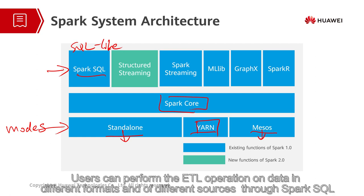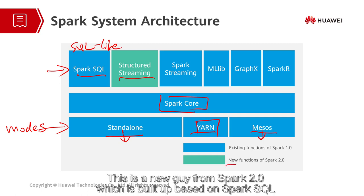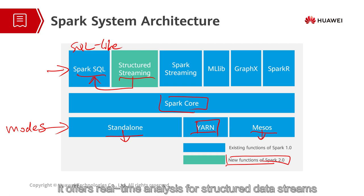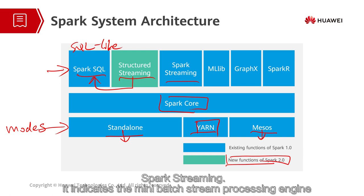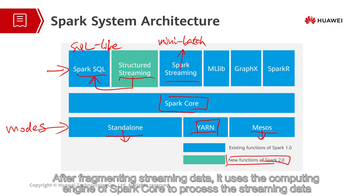Users can perform the ETL operation on data in different formats and of different sources through Spark SQL, completing specific query operations. Secondly, structured streaming. This is a new guide of Spark 2.0, which is built up based on Spark SQL. It offers real-time analysis for structured data streams. In Spark streaming, it indicates the mini-batch stream processing engine, which can provide second-level data processing in most cases. After fragmenting streaming data, it uses the computing engine of Spark Core to process the streaming data.